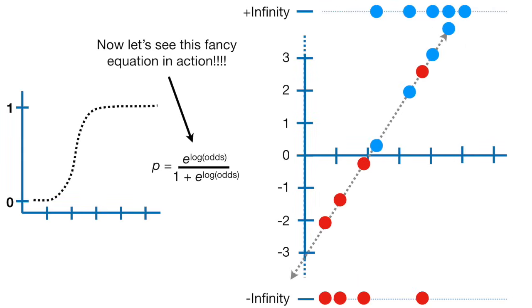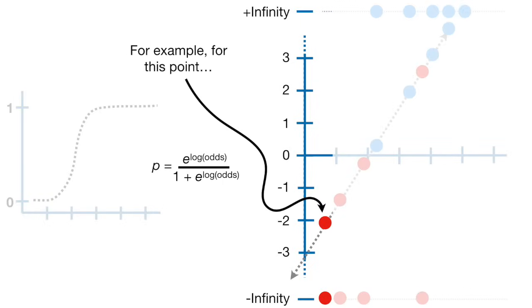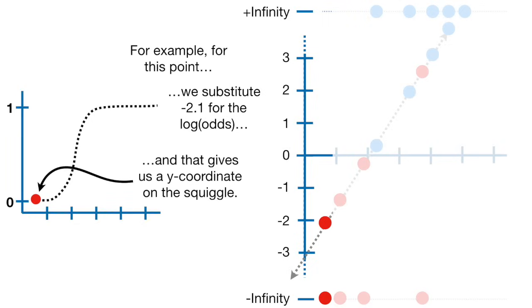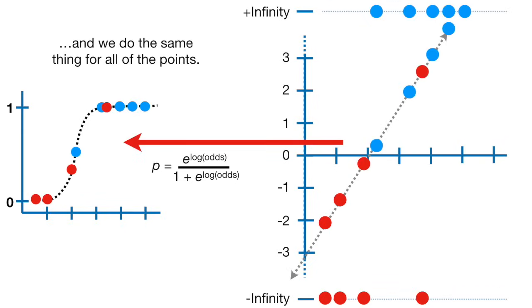Now let's see this fancy equation in action. For example, for this point, we substitute negative 2.1 for the log odds, and that gives us p equals 0.1, and that gives us a y coordinate on the squiggle. And we do the same thing for all of the points.